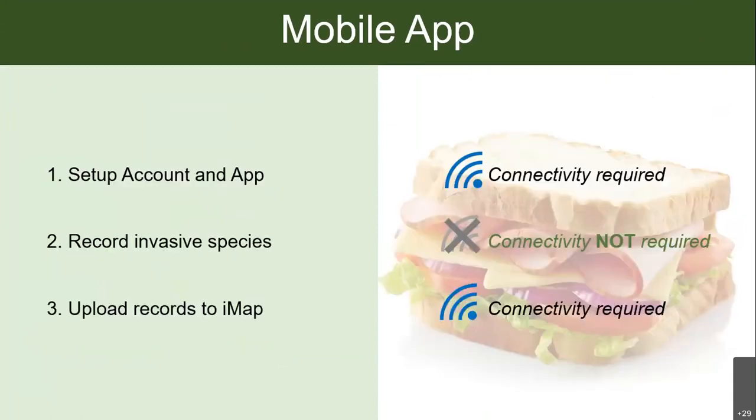With the mobile app, I like to think of it like a sandwich — these are the different parts that need WiFi and the parts that don't. You need WiFi and connectivity when you're setting up your account in the app. But once you're out in the field recording invasive species and making observations, you don't necessarily need WiFi. Once you're done collecting data and want to upload it to the database, you'll need WiFi again. So: WiFi to set up, no WiFi needed in the field, but WiFi required to upload those records.